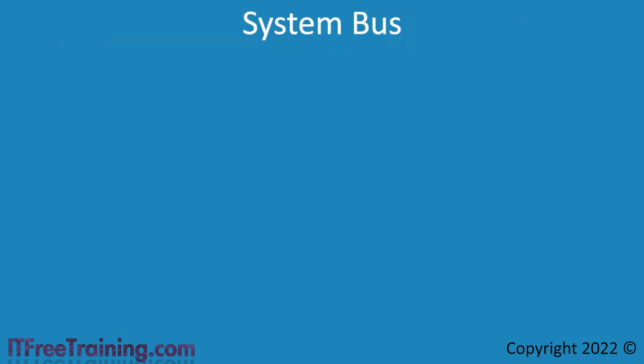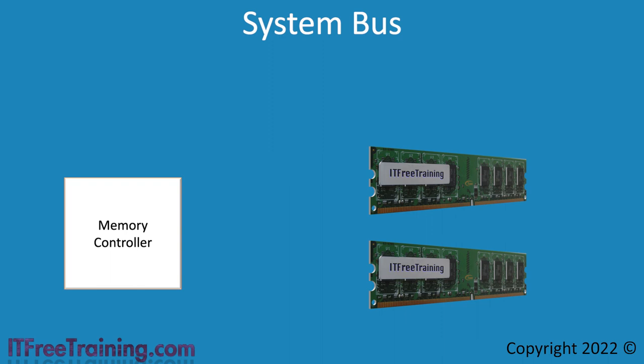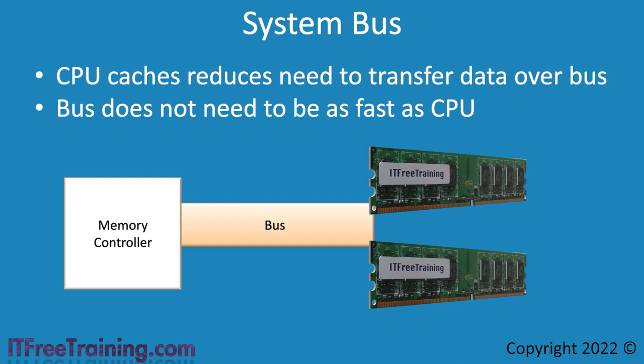When a cache miss occurs and the CPU needs memory from the memory modules, the memory controller is required to fetch that memory. The memory controller will either be part of the CPU or a separate chip on the motherboard. The transfer of memory is done using the bus. There have been a number of different buses implemented, and as time goes on the speed of these buses has increased. CPU speed has not increased at the same rate, and nowadays the bus speed is getting close to the same speed as the CPU. By using a CPU cache, the need to transfer data over the bus is reduced — because in many cases the data will be found in the cache, eliminating the need to use the bus.